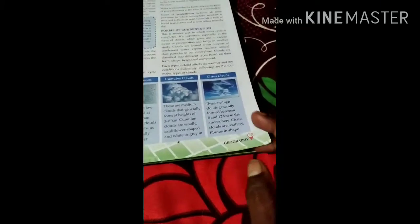Cirrus clouds are high clouds generally formed between 6 and 12 kilometers in the atmosphere. Cirrus clouds are feathery and fibrous in shape.